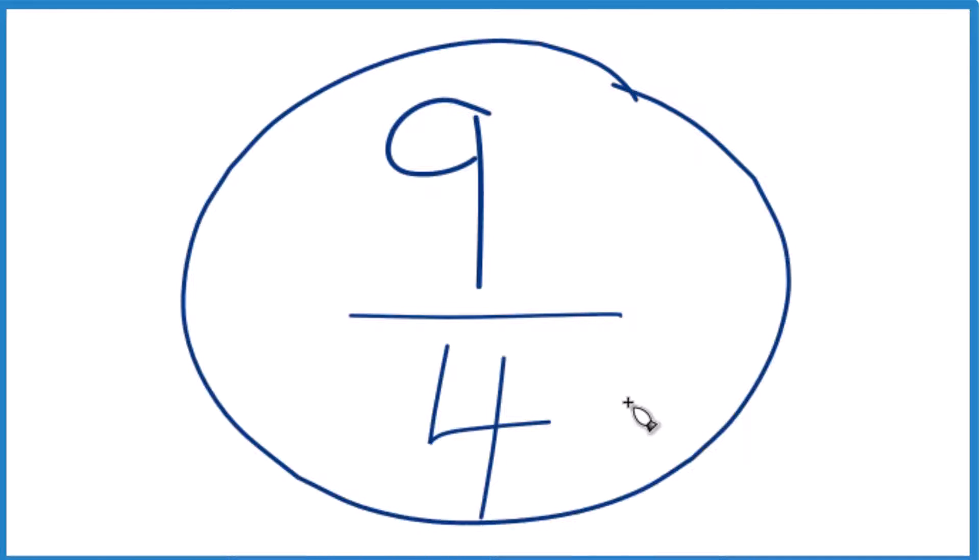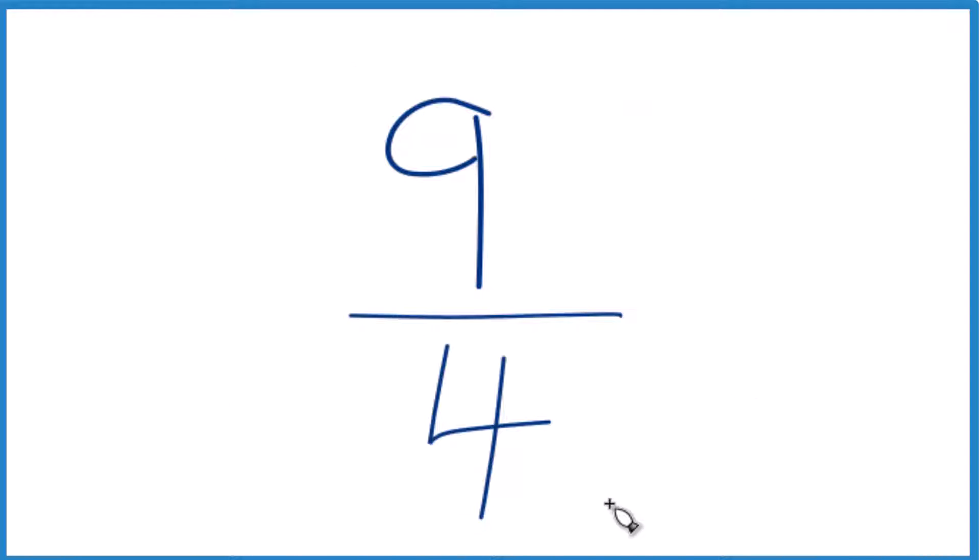Let's write the fraction 9/4 as a decimal. Here's how we do it. We can see that nine is a lot bigger than four, so our answer, our decimal, should be greater than one.